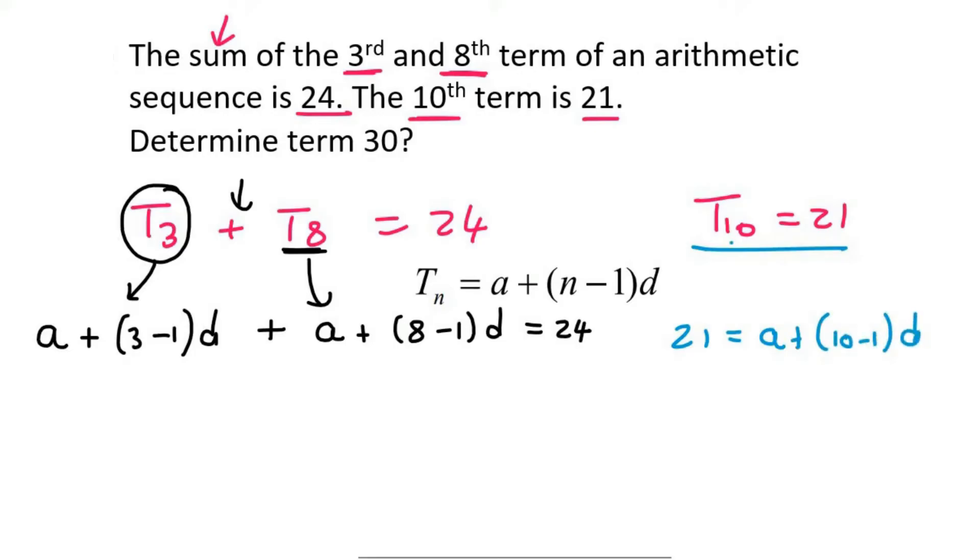Now we're just going to neaten up. So for this side, it's going to be A plus 2D plus A plus 7D equals 24. I can neaten that up even more, 2A plus 9D equals 24. And then on this side, it will just be 21 equals A plus 9D.